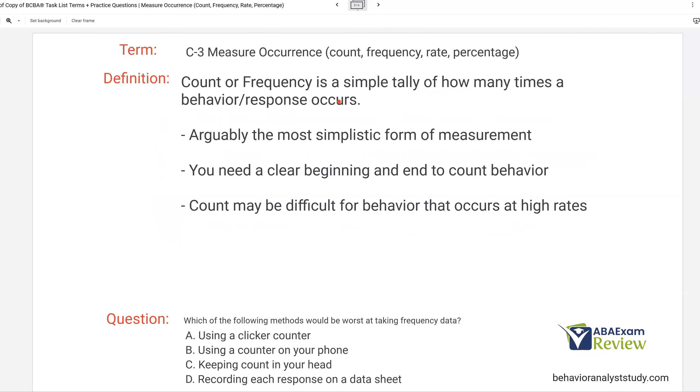So we get this count and frequency, which is just a simple tally of how many times a behavior or response occurs. And it's really as simple as that. Don't overcomplicate what frequency or count is. A behavior happens, that's one. If behavior happens again, that's two. It's a simple, simple count. Arguably the most simplistic form of measurement. If we can use count and frequency and get an accurate reading, that's a good thing. It's very easy to do. But you want to make sure you've got the right tools, number one, and you need a clear beginning and end to count behavior.